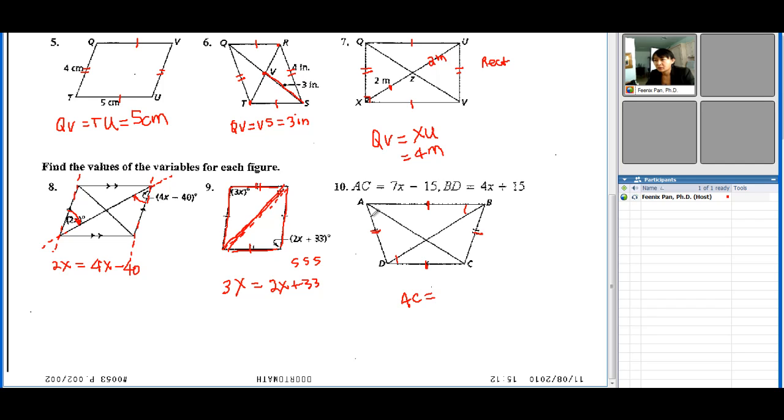And this angle here is equal to this angle here. So this triangle ADB is congruent to triangle BCA. We have that corresponding parts of congruent triangles are congruent, therefore AC is equal to DB.